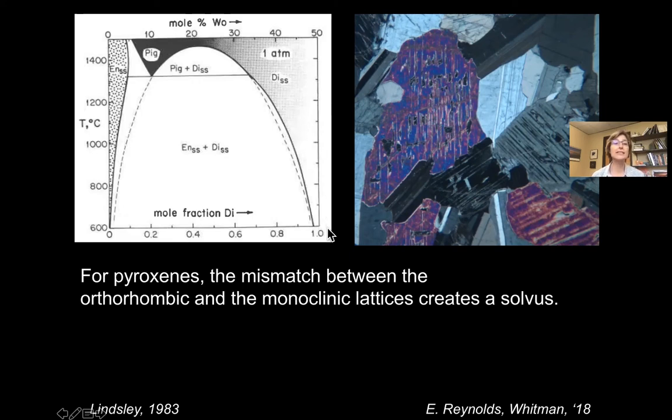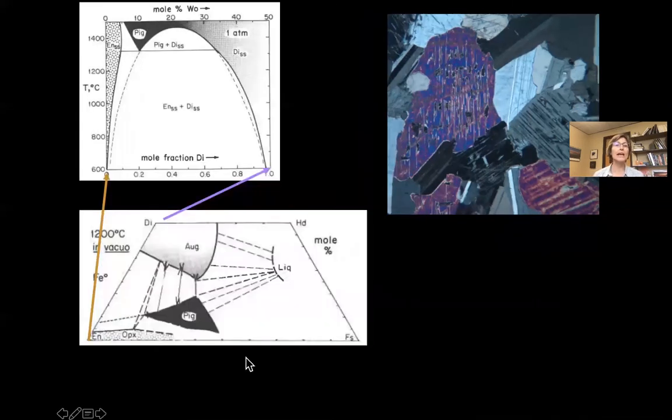Now notice in this system, this is a binary system. We have two components, our magnesium pyroxene and we have our diopside pyroxene. But of course we know in nature that we also have to consider the presence of iron. And so instead, Don Lindsley in the 80s, in the early 80s, published these diagrams to show that we could use the pyroxene quadrilateral and indicate which pyroxenes are present at a given set of pressure and temperature conditions by showing a stability field.